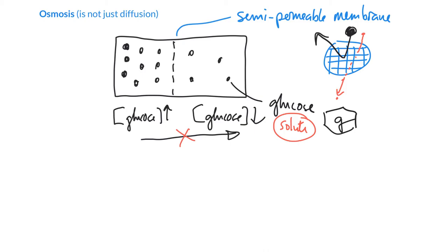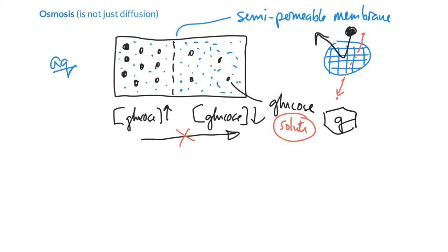So what else do we have? Well, if we've got an aqueous solution, the aqueous means that you've got water. And the water is itty bitty. So I've got a lot of water on this side. And notice on the other side I don't have as much water because there's glucose taking up the room.